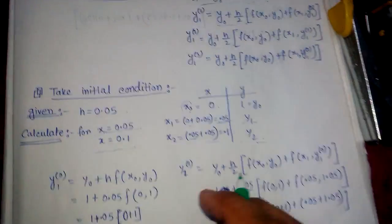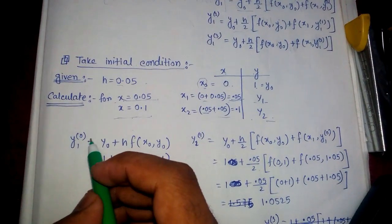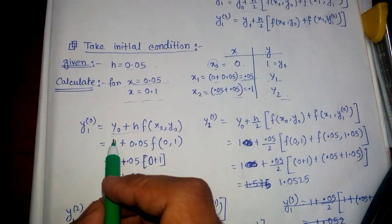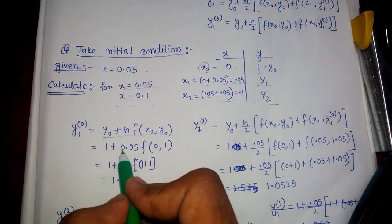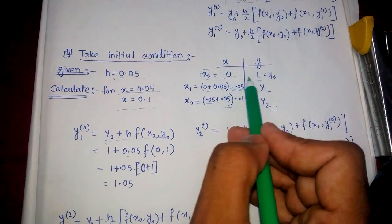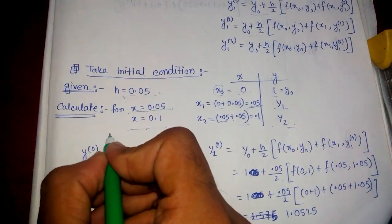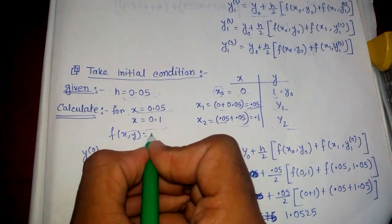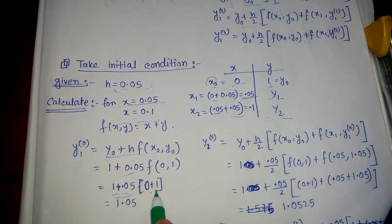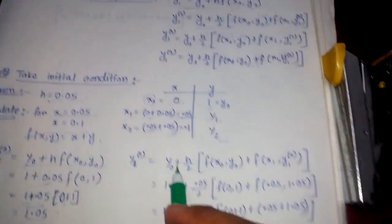For the first case we calculate y1. The first approximation y1⁰ equals y naught plus h times f(x naught, y naught). Here y naught is 1, h is 0.05, x naught is 0 and y naught is 1. Since f(x, y) equals x plus y, we get f(0, 1) equals 0 plus 1 equals 1. So y1⁰ equals 1 plus 0.05 times 1 equals 1.05.